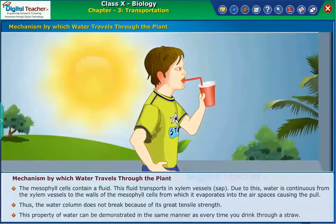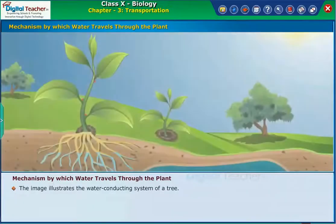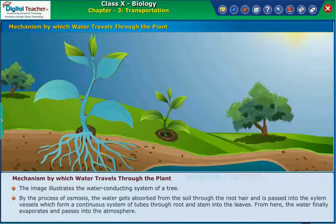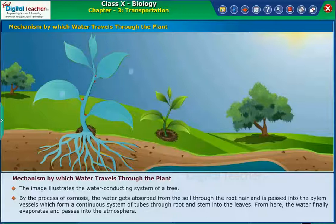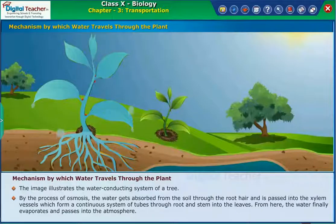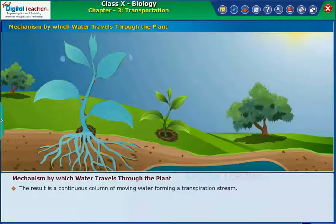This property of water can be demonstrated in the same manner as every time you drink through a straw. The image illustrates the water conducting system of a tree. By the process of osmosis, water gets absorbed from the soil through the root hair and is passed into the xylem vessels, which form a continuous system of tubes through root and stem into the leaves. From here, the water finally evaporates and passes into the atmosphere.